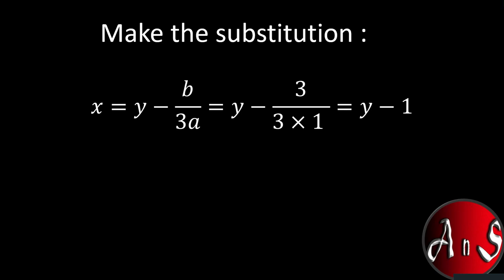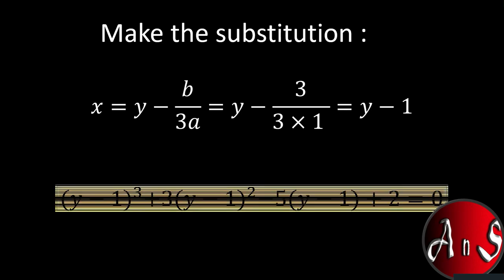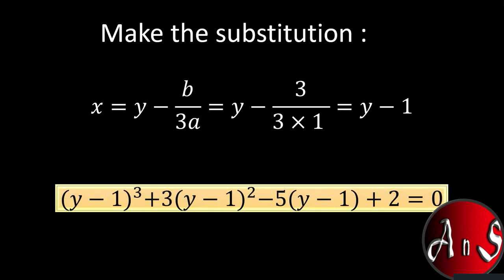Since b is 3 and a is 1, we get the substitution x equals y minus 1. Making this substitution will give us the following equation where all the x's will be replaced by y minus 1, and obviously all the roots of the equation will also be one more.